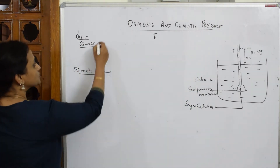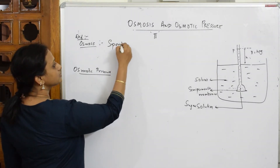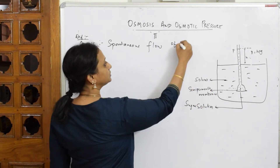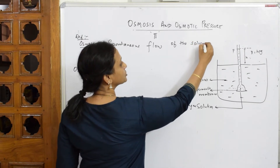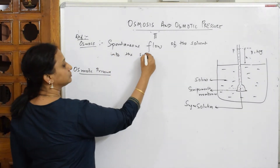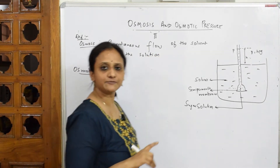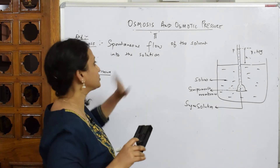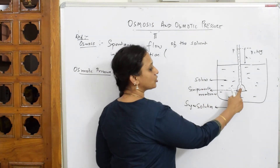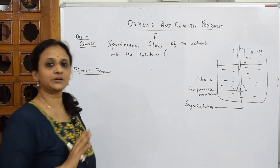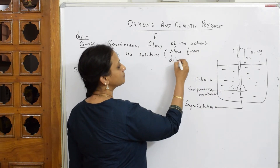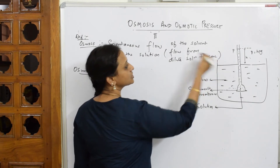Now let's define osmosis. Osmosis is the spontaneous flow of the solvent into the solution. Since the solution already has solute particles, the spontaneous flow of solvent into the solution is termed osmosis. In other words, it is the flow from a dilute solution to a concentrated solution. The outside is dilute and the inside is concentrated.